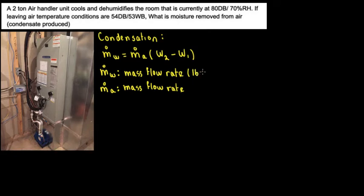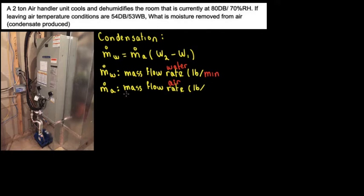The units are going to be pounds. So the mass flow rate of water — I'll put that in another color — and this is going to be mass flow rate of air. Why do we have a dot on top? Because we're talking about rate, and when you're talking about rate you're talking about time. So mass is pounds, rate is per minute. The other one is the same: mass divided by time, which is minutes or hours.